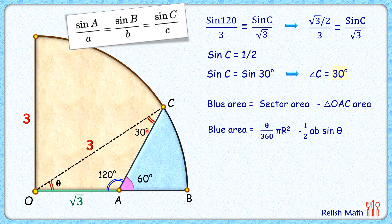Now this angle C is 30 degrees. So by the angle sum property, the value of θ will be 30 degrees.